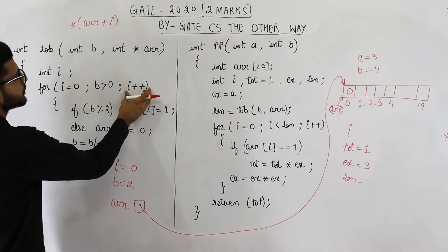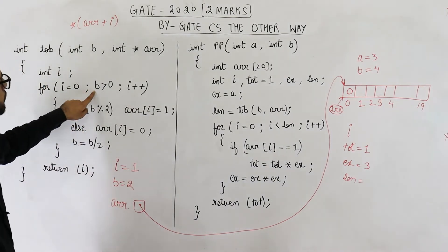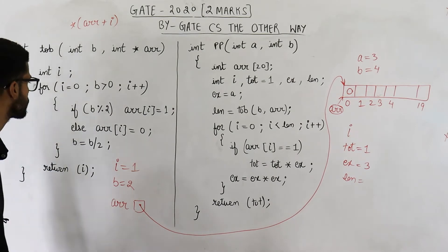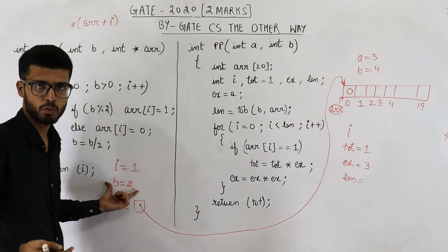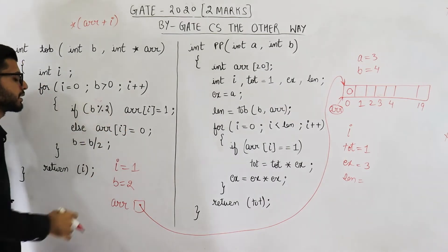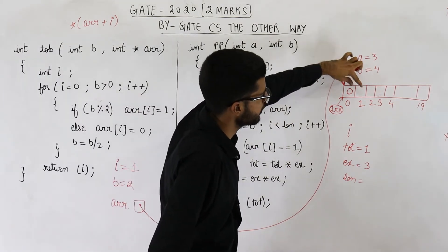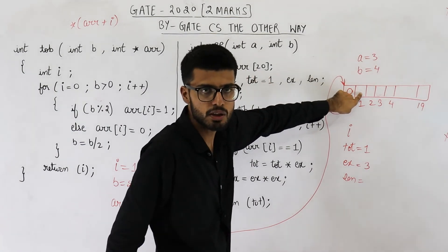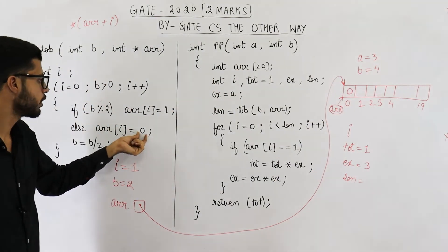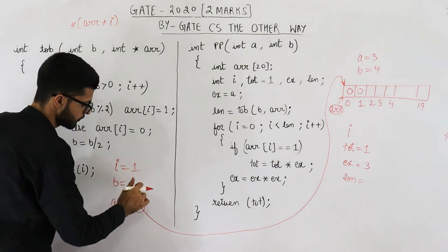In the next iteration, i becomes 1. b > 0: 2 > 0 is still true. b % 2 = 2 % 2 = 0, so the if condition is false again. The else executes: arr[1] = 0. Then b = b / 2, so b becomes 1.